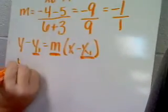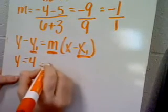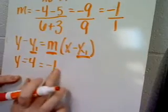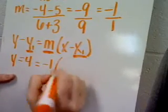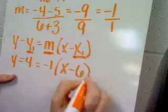So when I substitute this in, I get y minus negative 4 equals negative 1 over 1, the slope, which could be reduced to just negative 1, times x minus 6.